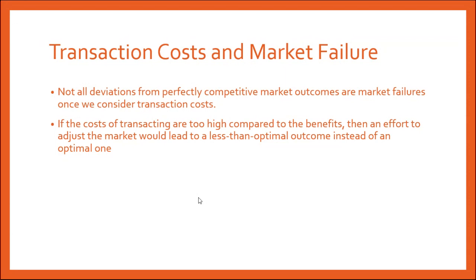The perfectly competitive market and the PPF that we looked at assumes that there are no transaction costs. If there are no transaction costs, then we will move to that optimal level. Externalities will get negotiated away. However, if there are transaction costs, we need to look at the benefits compared to the costs. If the costs are too high compared to the benefits, then actually trying to overcome the market failure through government action could move the market away from allocative efficiency.